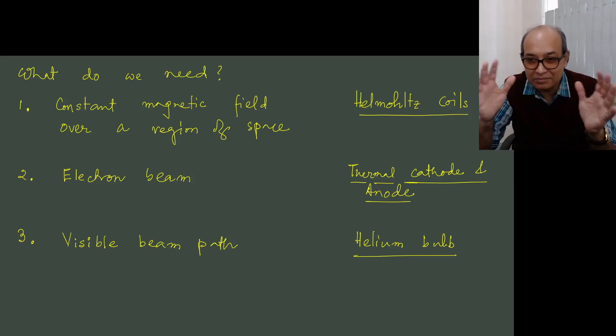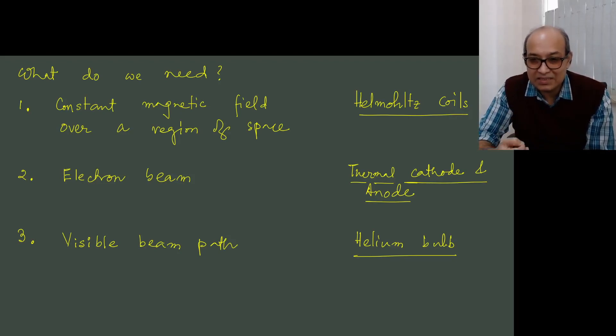So what we do is we take advantage of a helium bulb. It's a glass bulb, we can see through it, and there is helium at extremely low pressure, typically 10 to the power minus 5 bar. So these electrons as a beam, if it moves inside the bulb maybe in a straight line or in a helical path or in a circle, whichever way, they collide with the helium atoms. The helium atoms are excited and they eventually radiate. So what we see is the light from the helium atoms and that helps us to locate the trajectory of the electron. And this is what we do.